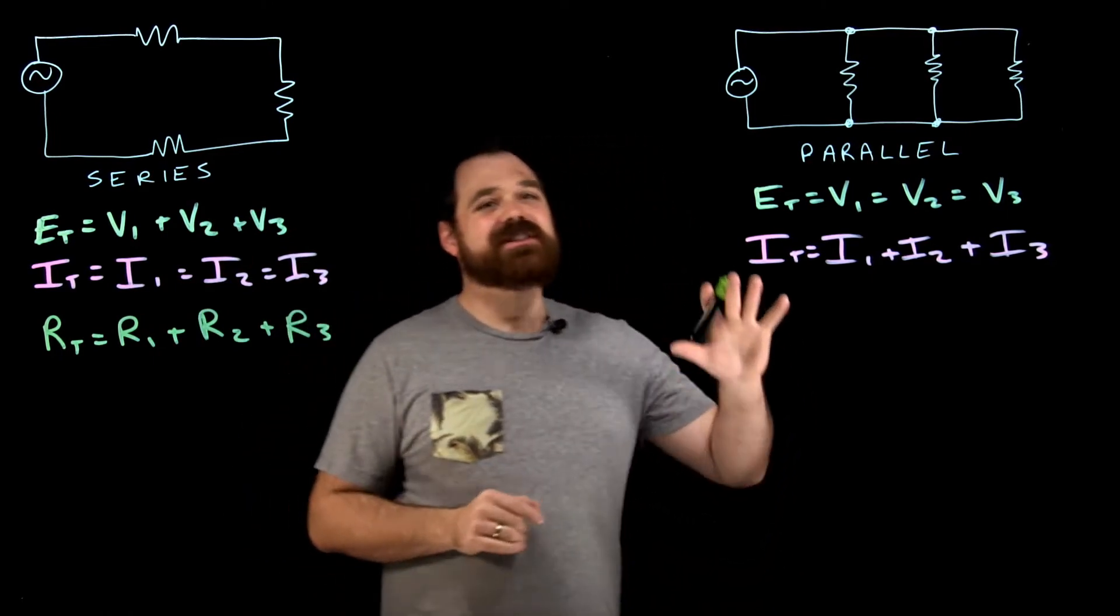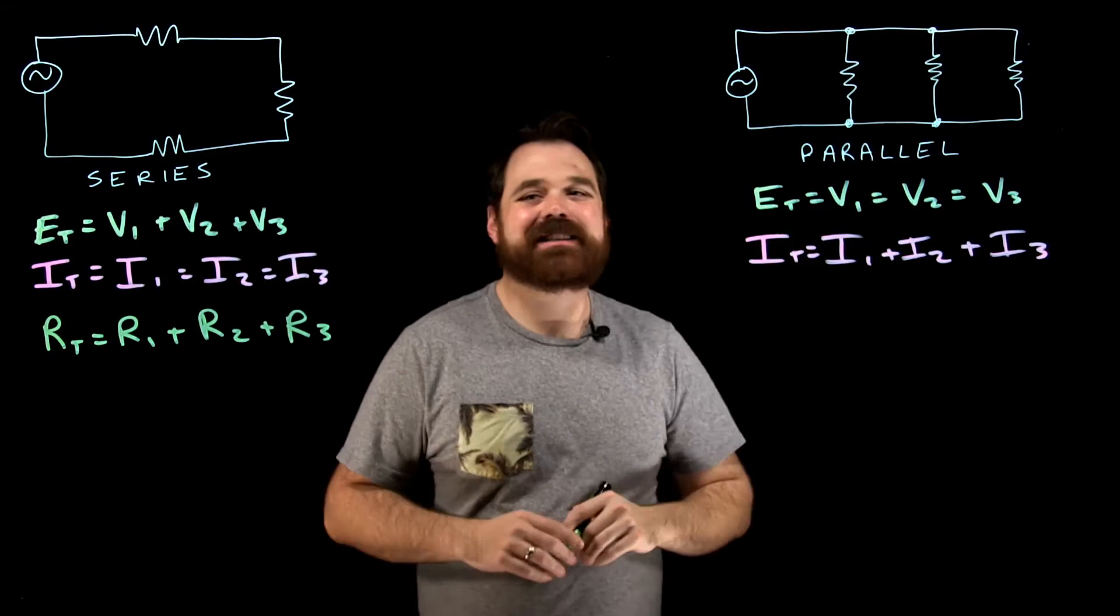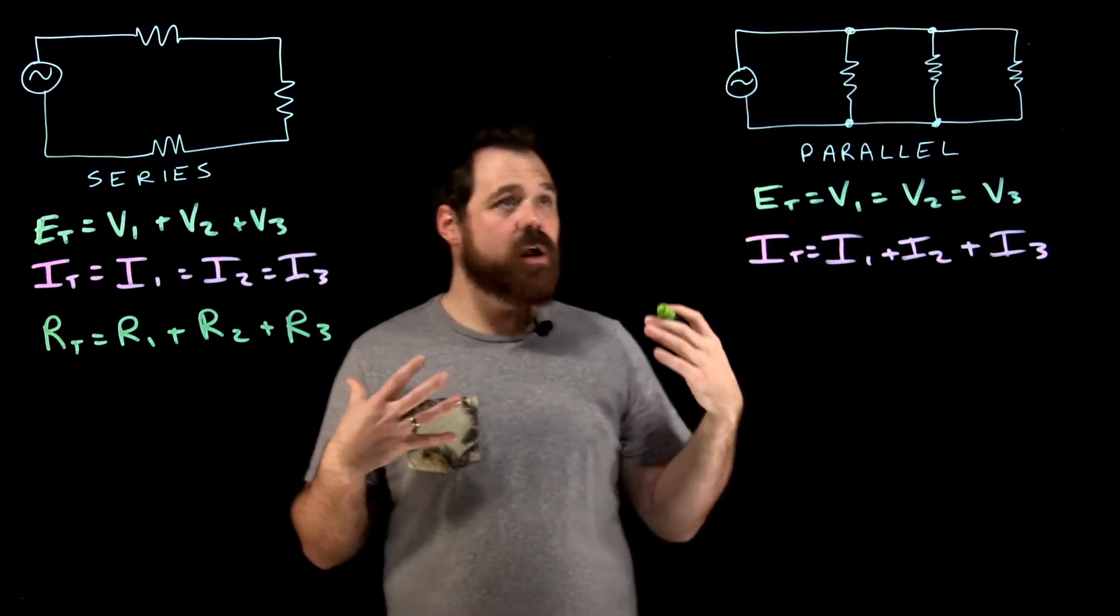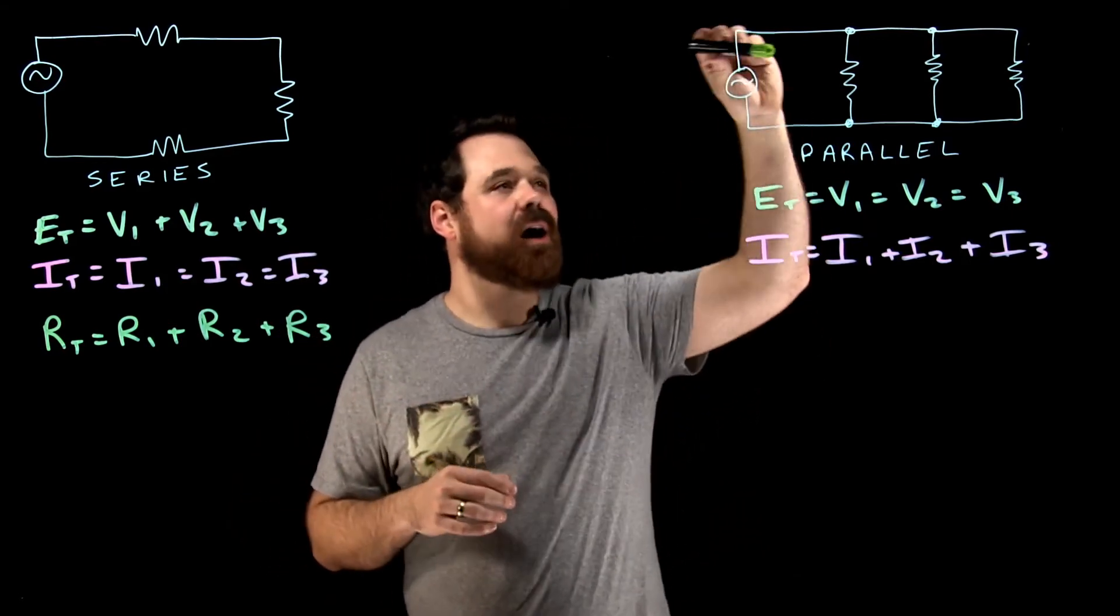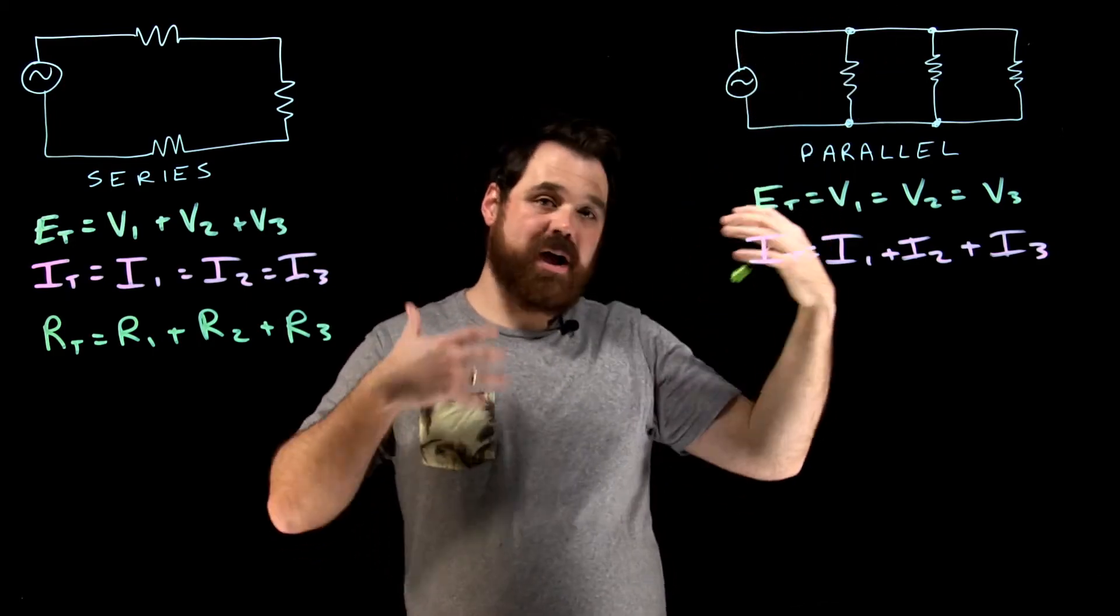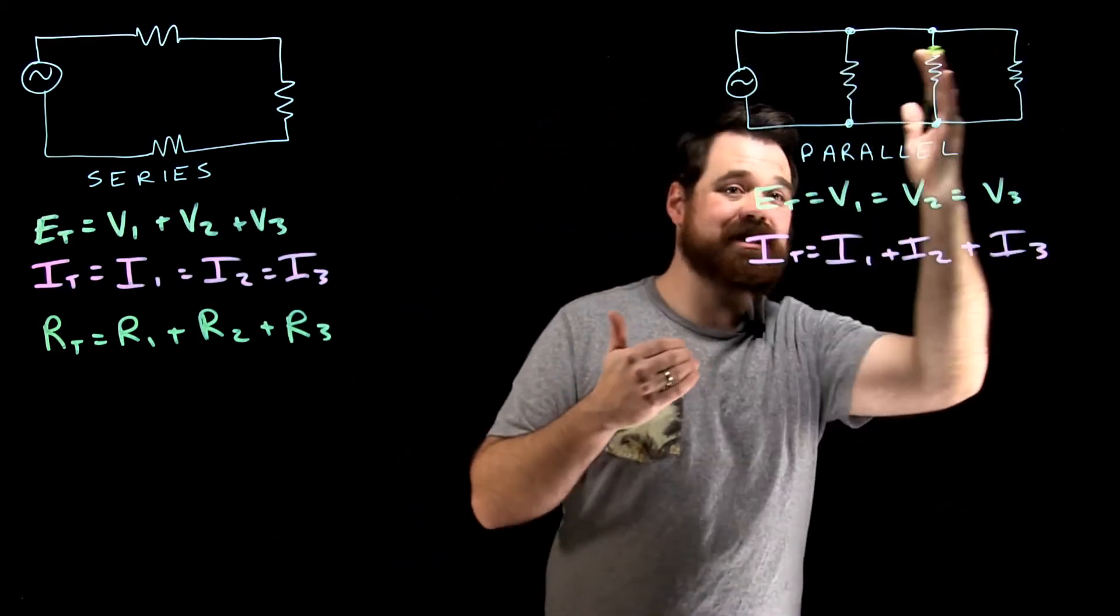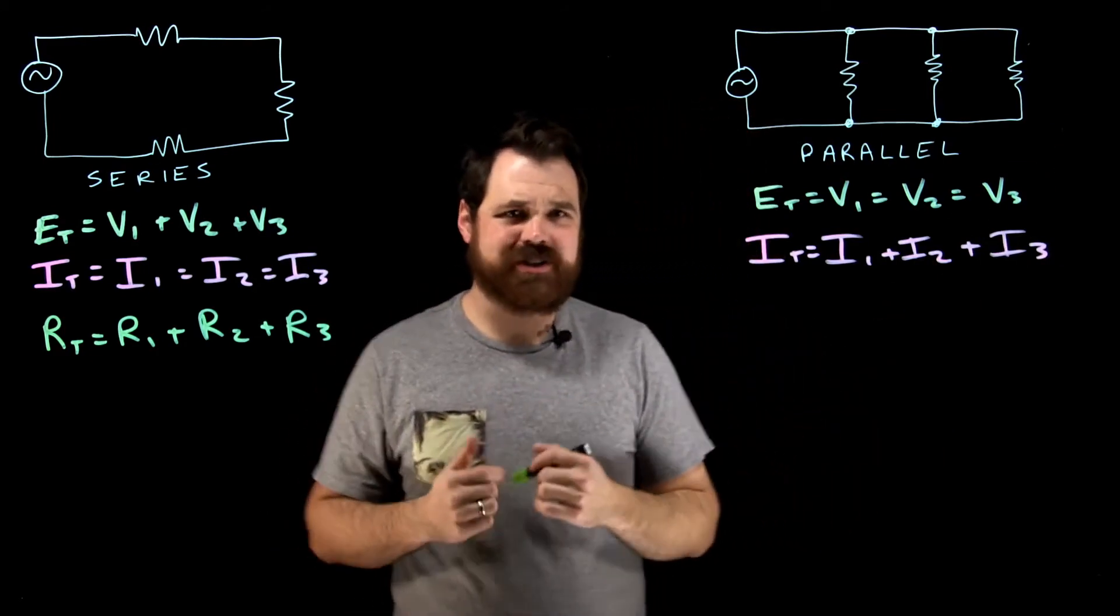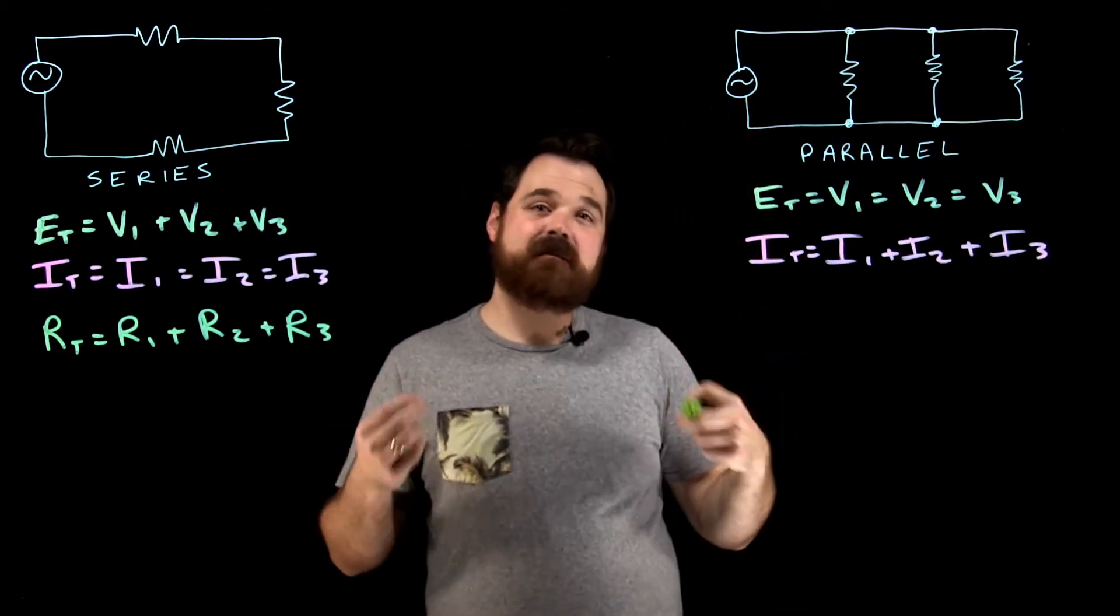Now it changes a little bit in parallel. This is where it gets tricky. As current flowing through this, I have the option of splitting off. My ohmic value, as I add more resistance in parallel, actually decreases. We call this an inverse relationship.